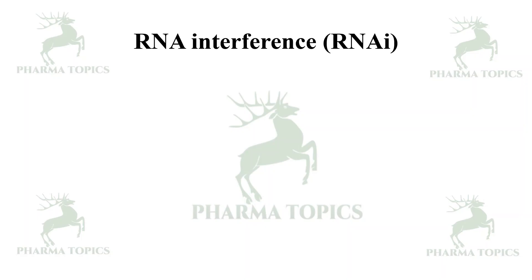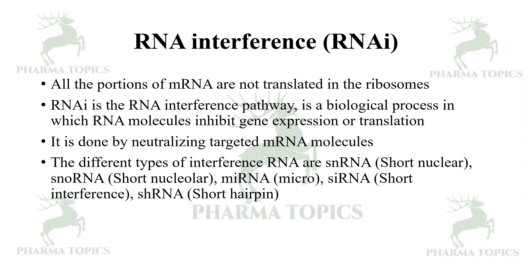Welcome to our pharma topics channel. Today we will discuss RNA interference. This mRNA, which is produced from DNA, is not fully translated in the ribosomes. Interference RNA interrupts the biological process and the production of proteins from the mRNA by inhibiting gene expression or translation — essentially silencing or neutralizing the mRNA molecules.